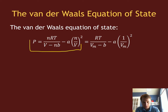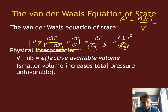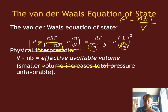The van der Waals equation of state has two key terms. There's this first term with V minus NB. If we recall, the regular equation of state for an ideal gas is NRT divided by V, so here there's this extra term minus NB. That minus NB is related to the effective volume of the gas — the fact that a gas molecule, while small, does take up some amount of volume. Enough gas molecules will take up enough volume that it matters at high pressures or low volumes.